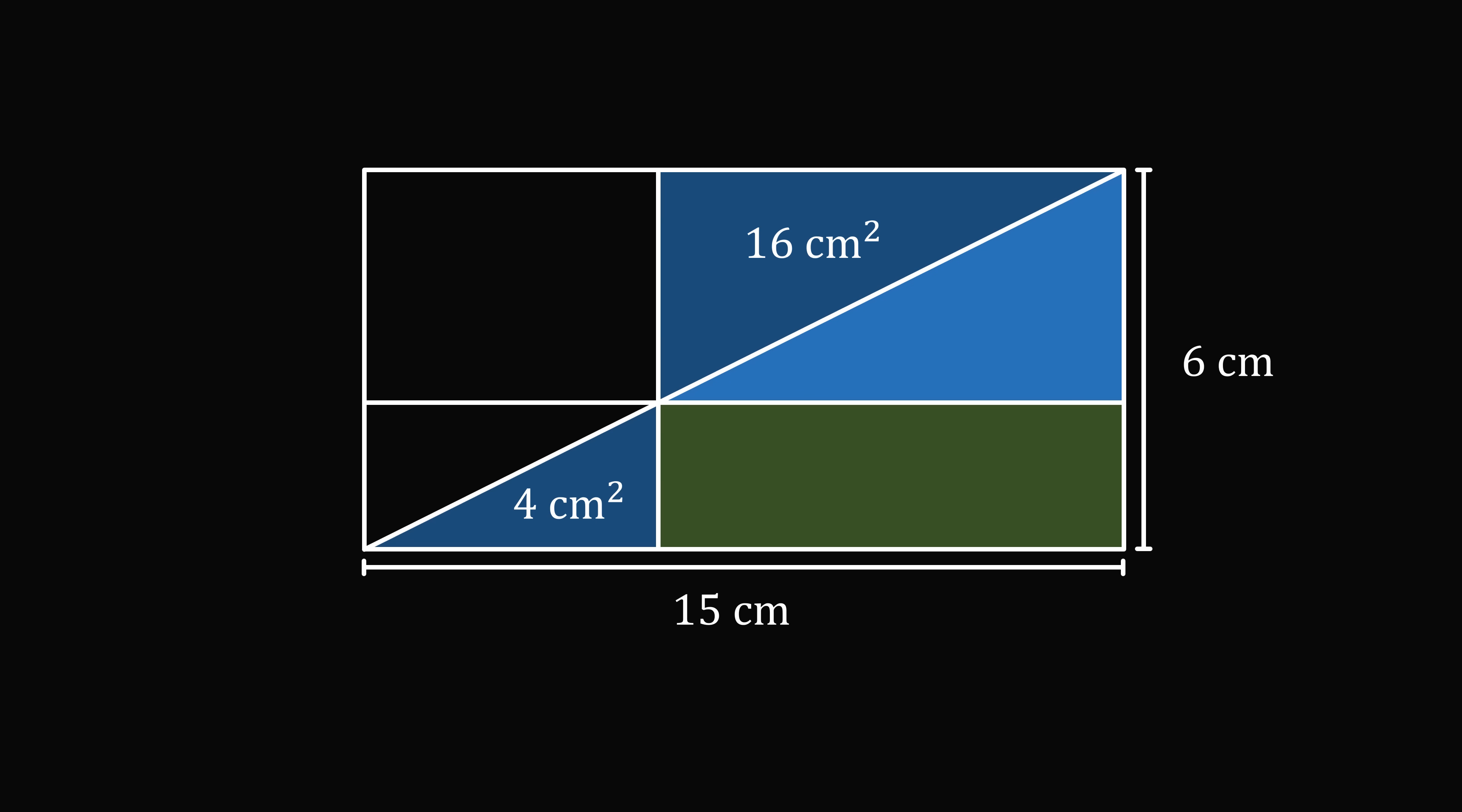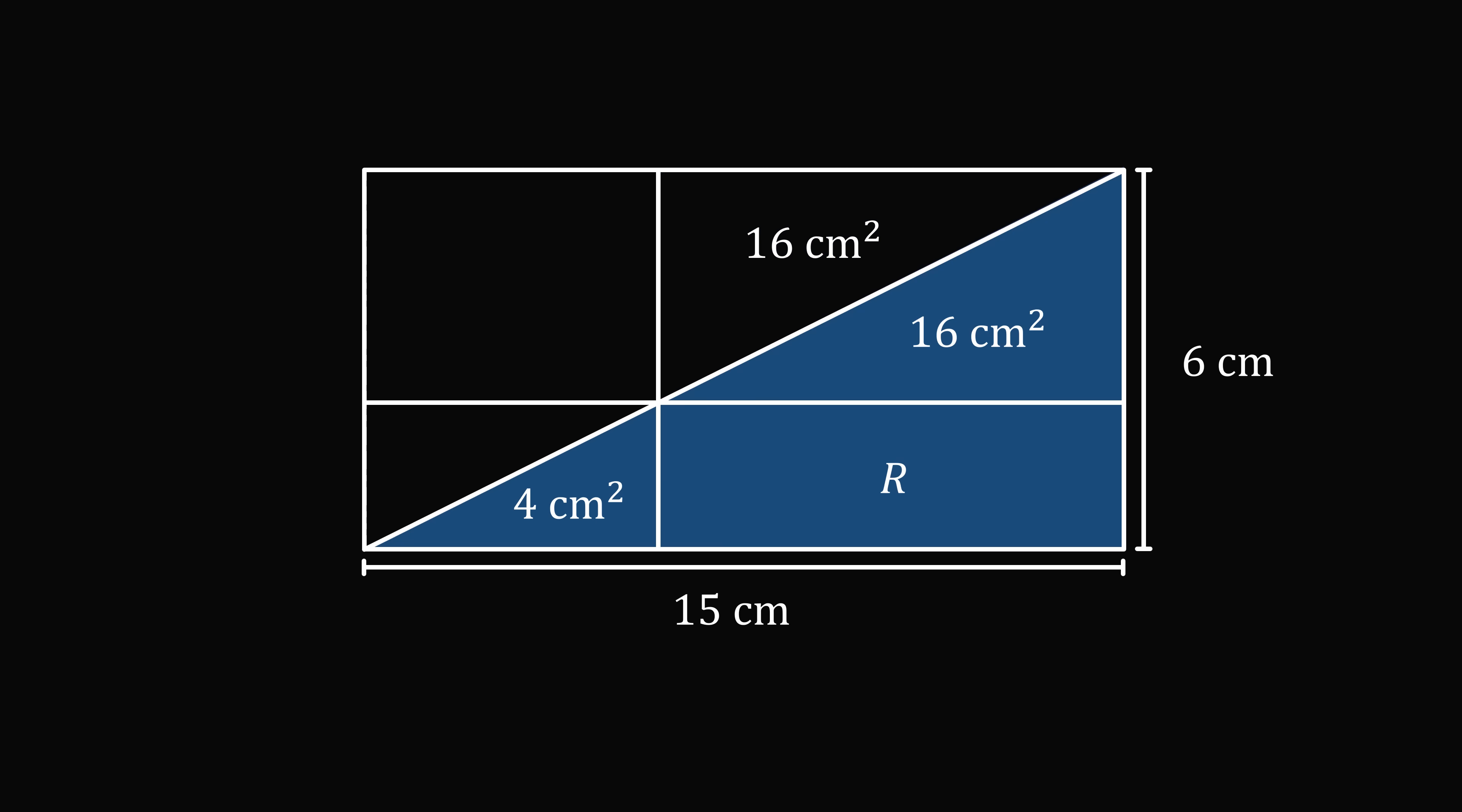Consider this right triangle over here. It's exactly congruent to the right triangle that's above it, because we have a rectangle that's divided by its diagonal, which will split the rectangle into two equal triangles. So this triangle has an area that's equal to 16 cm². Let's say the rectangle has an area that's equal to r. So now, let's focus on half of the big rectangle.